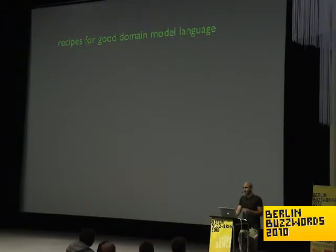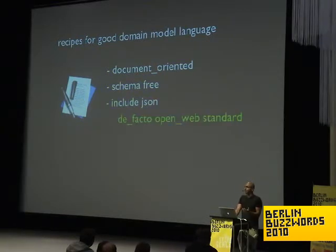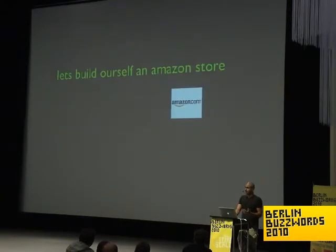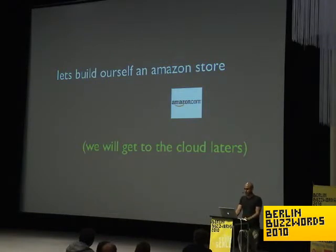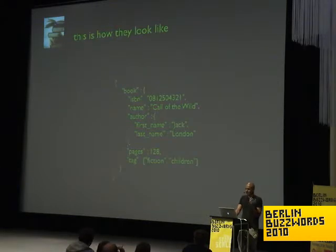What are some of the recipes for a good domain model? First of all, it's very nice that it's document-oriented. It will be schema-free and include JSON, which seems like the de facto standard of any open web application. I'm going to use that as an example with Elasticsearch — let's try and build ourselves an Amazon store.